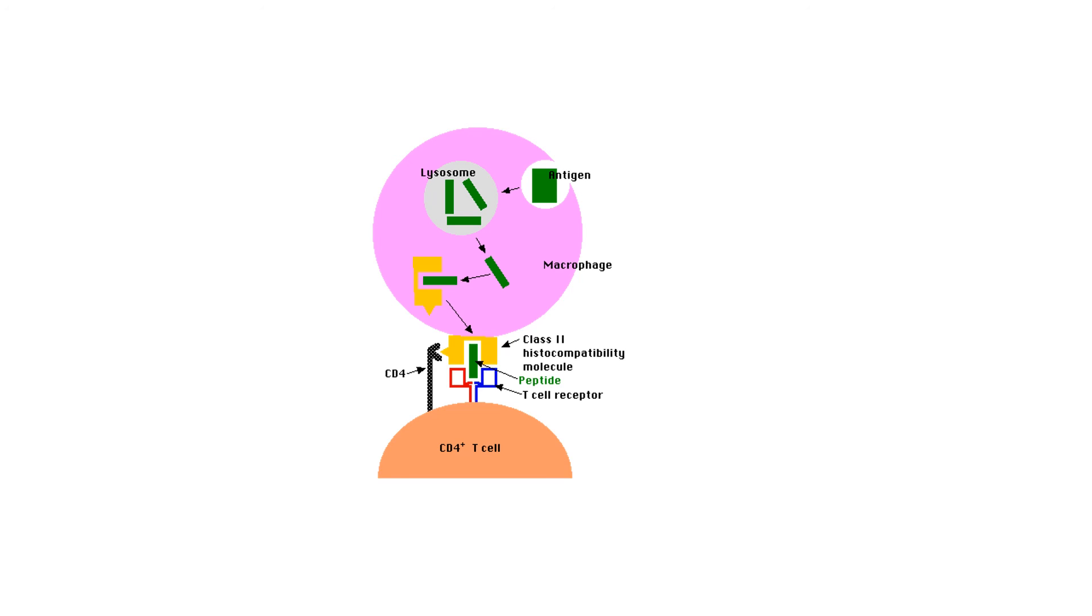The majority of the helper T cell clones become T helper II or T helper I cells. T helper I cells produce cytokines that activate macrophages, cytotoxic T cells, and natural killer cells. T helper II cells produce cytokines that activate B cells and stimulate antibody production by B cells.